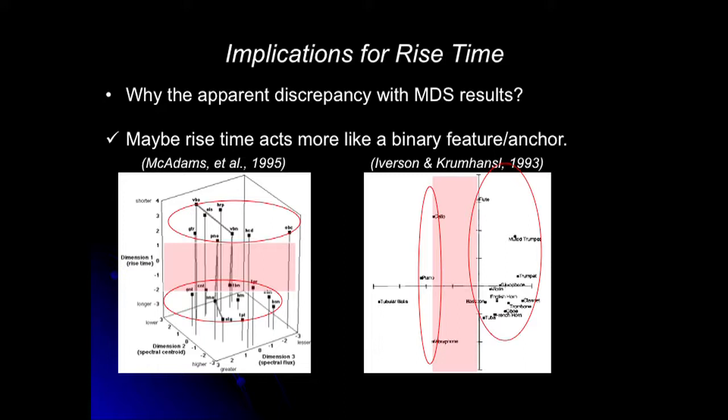How do we resolve the role of rise time if it was supposed to be one of three major contributors? Looking back at the literature, there are suggestions that rise time really boils down to a much simpler characteristic perceptually. Looking at two MDS solutions, the dimensions relating to rise time show clusters of instruments pulled together in two pools — one on each side — with nothing in between. There's a big gap in the middle regardless of which picture we look at. It's as if we're treating it like just two distinct categories.